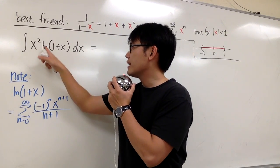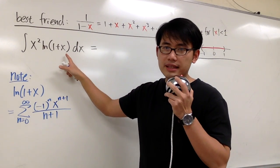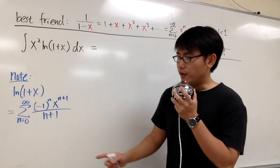We are going to integrate x squared times ln of 1 plus x by using power series expansions.